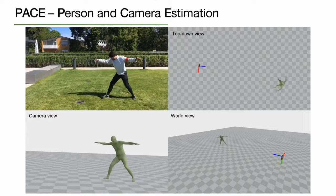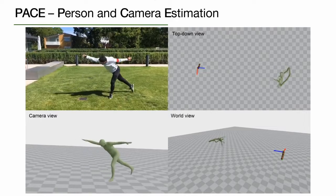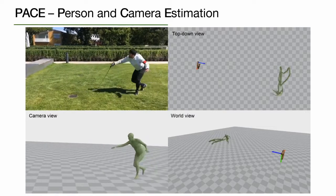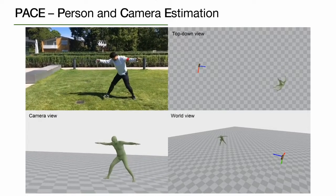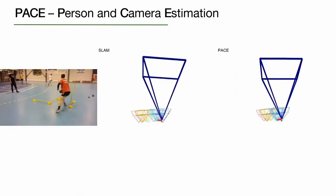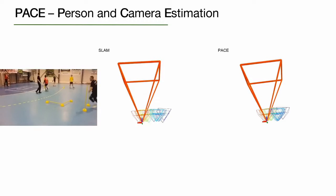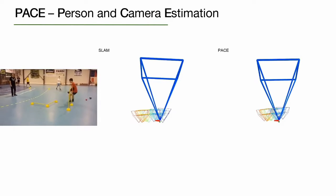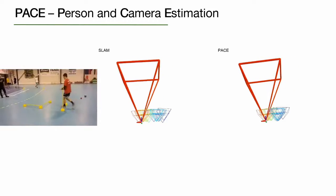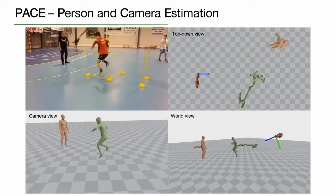In our paper, we propose PACE — Person And Camera Estimation — that disentangles human and camera motions using both foreground human motion priors and background scene features. As seen in this example, PACE can fix inaccurate camera trajectories and solve for the global scale by using the human motion prior constraints. The SLAM algorithm helps the motion prior to estimate a more accurate human global trajectory.